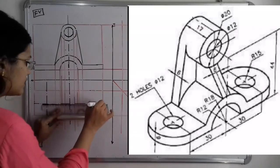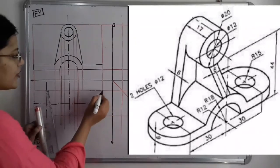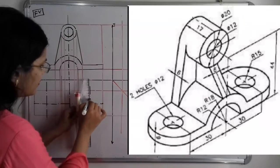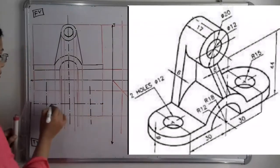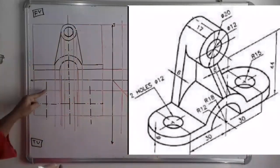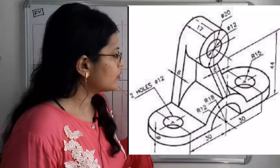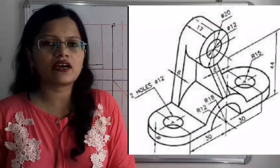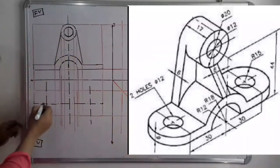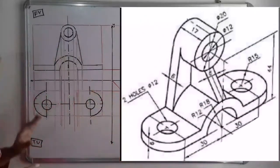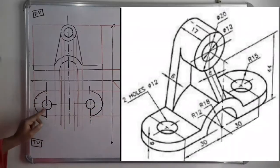We extend the horizontal center line in dash-and-dot form to the other side, measure 15 millimeters along the horizontal line, and draw a vertical line through that point to find the second center. From each center we draw the semicircles and small holes. The holes are given as diameter 12 (two holes of ∅12), meaning radius 6 millimeters. We take 6 millimeters in the compass and complete the holes on both sides.